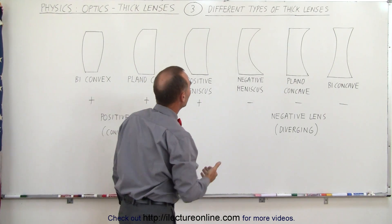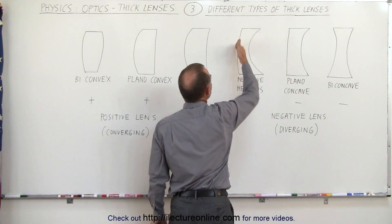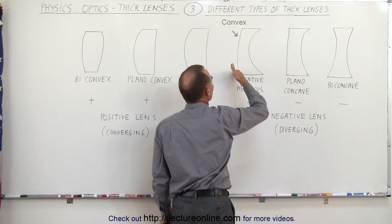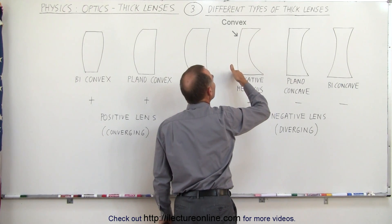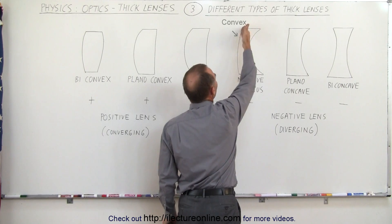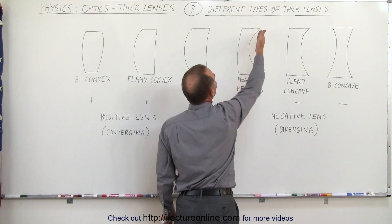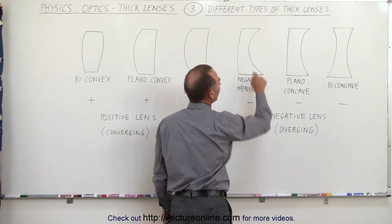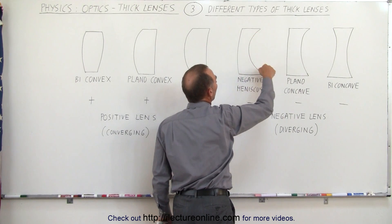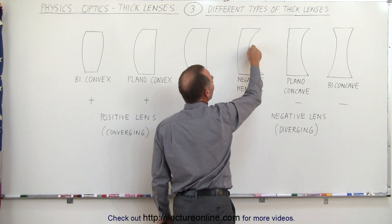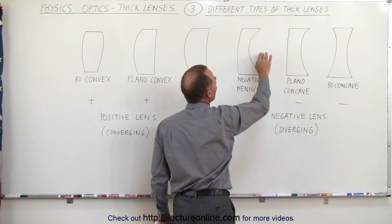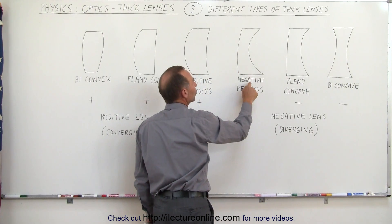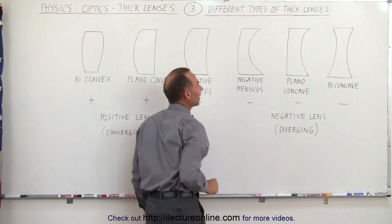On the other side, we can have it where the concave side has a larger curvature and the convex side has a smaller radius of curvature, so the concave side overpowers the convex side, causing the whole lens to act more like a diverging lens — so it's called a negative meniscus lens.